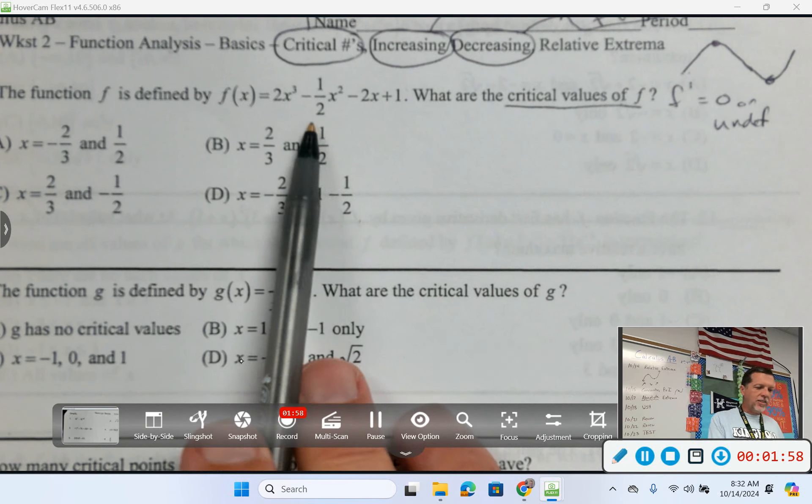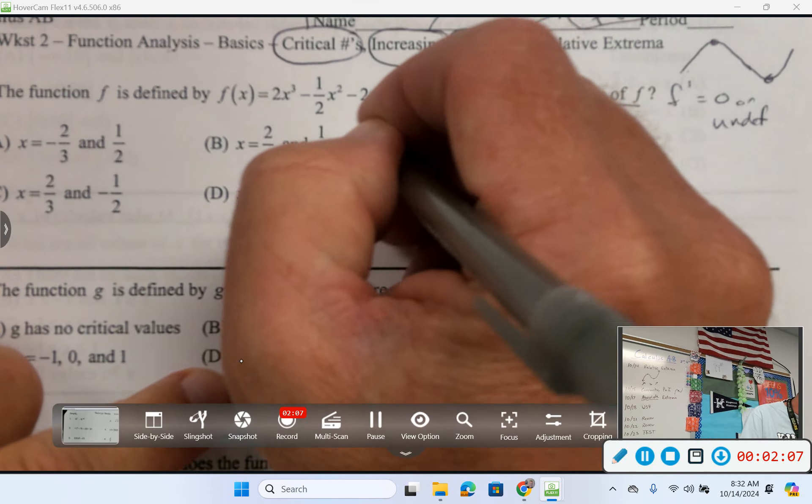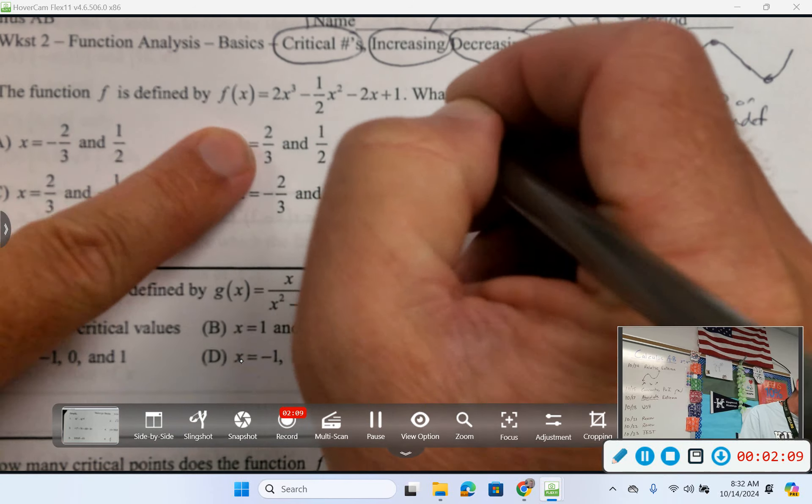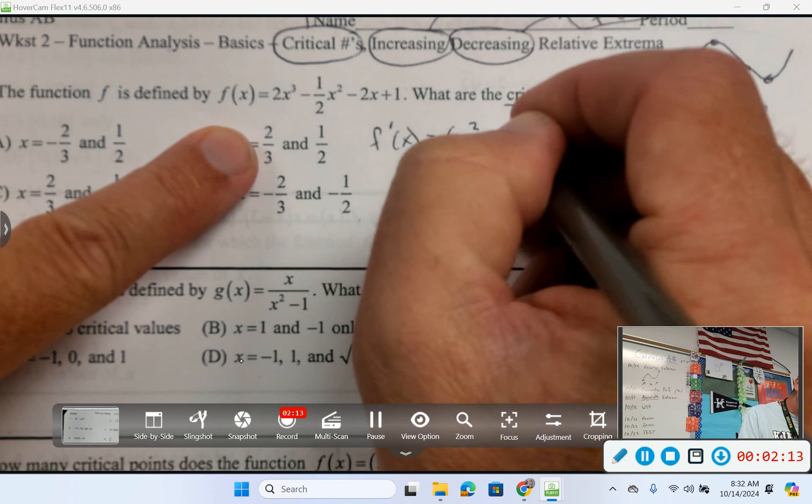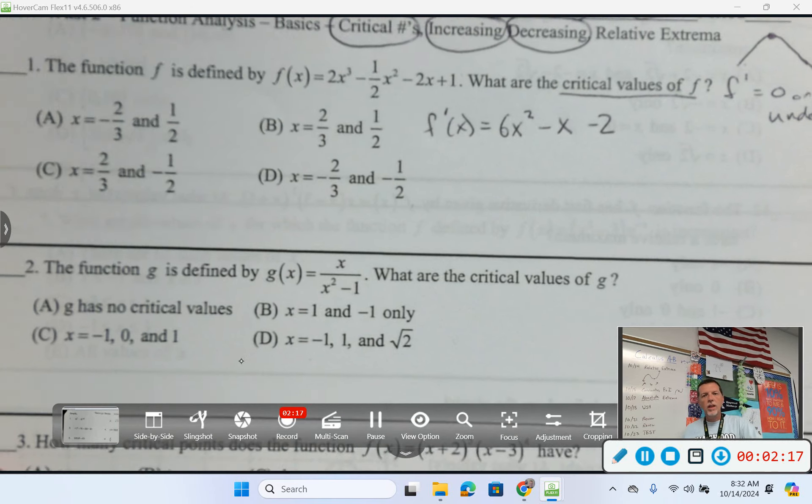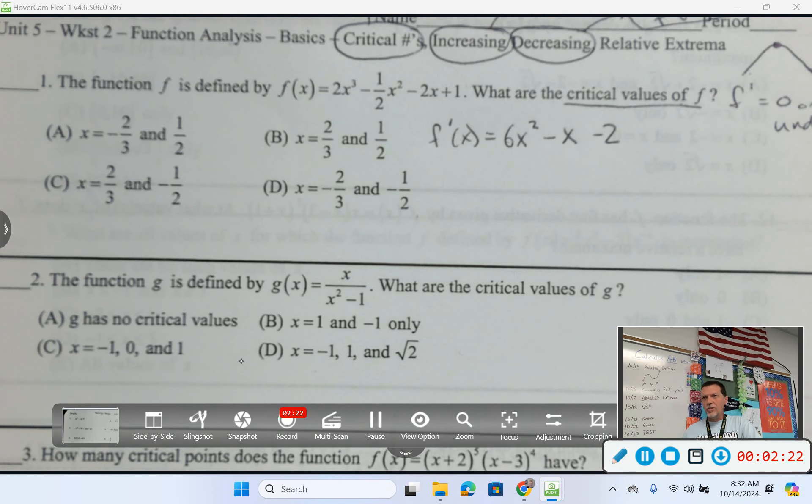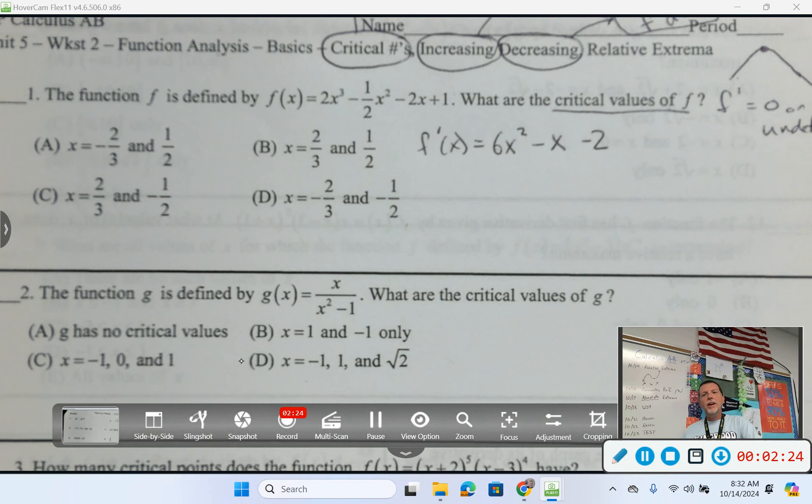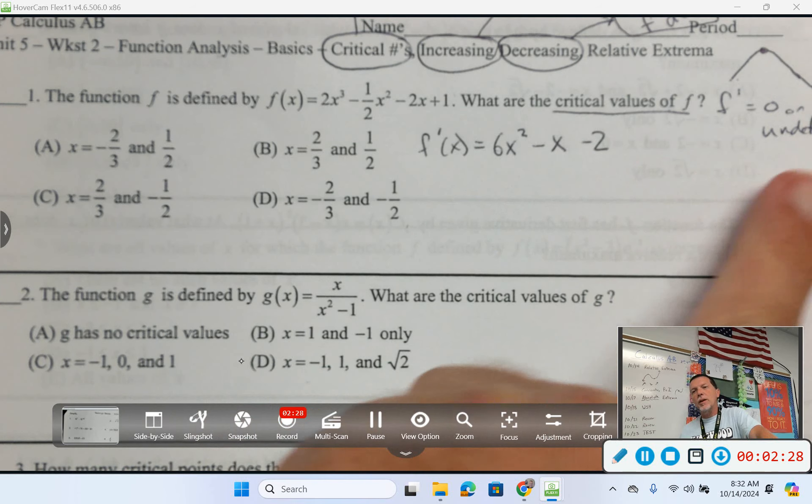So critical values would be where F prime is zero or undefined. Now, that's just a nice polynomial, so I don't think it's going to have any undefined places. But let's take a derivative, set it equal to zero, and that will tell us our critical values. So F prime, 6x squared, minus x, minus 2. And then we'll set that equal to zero to get the critical numbers. It's nowhere undefined, like it's defined everywhere, so I don't have to worry about the undefined part.